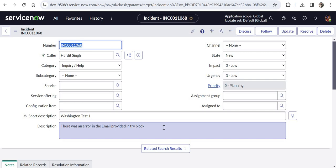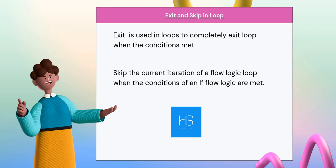The next feature is Exit and Skip in loops. ServiceNow has two types of loops: the For Each loop and the 'Do the Following Until' loop. Now if you want to exit that loop at any particular condition you can do so immediately. This is nothing new for developers who have worked in Java, .NET, or JavaScript, but ServiceNow has now introduced this in loops as well.